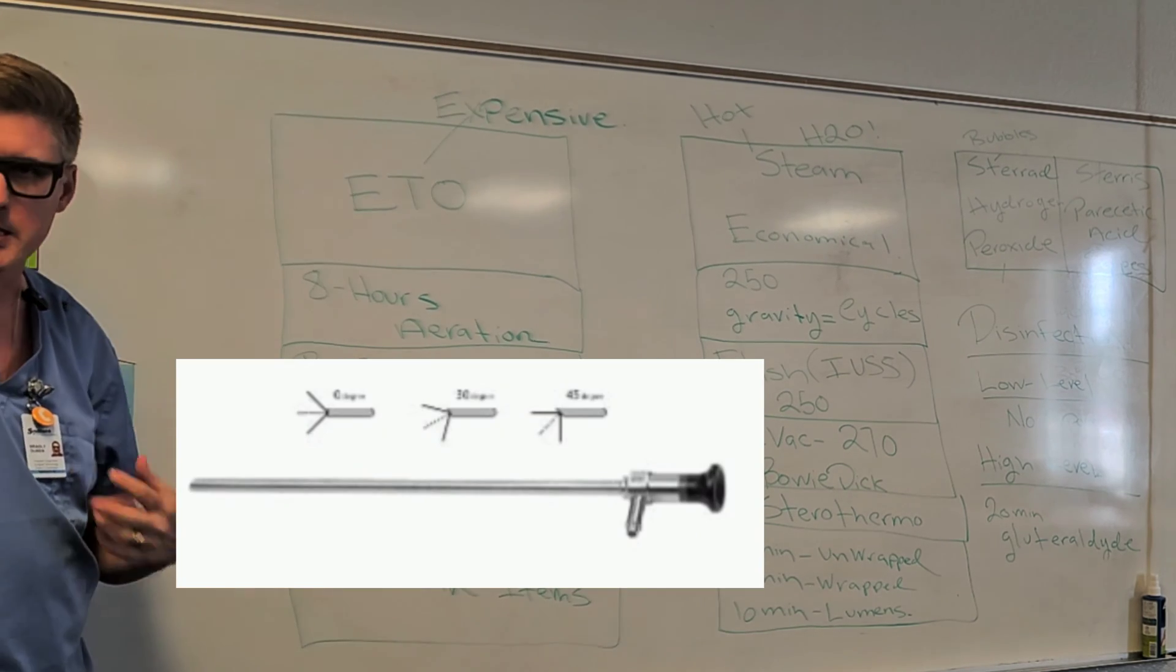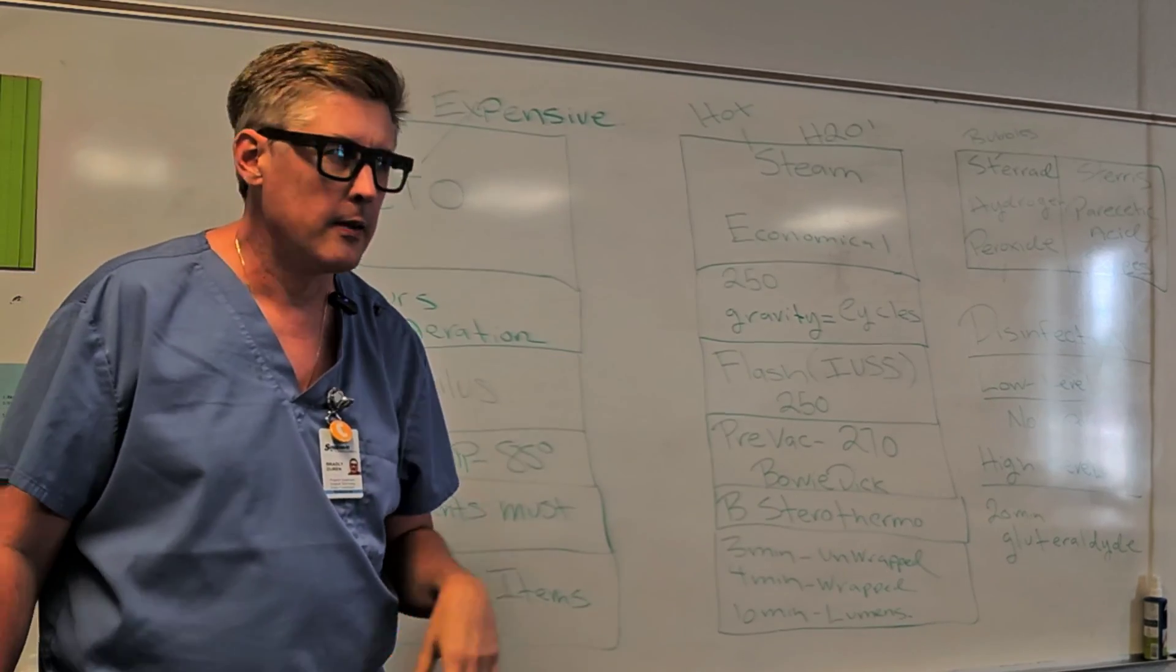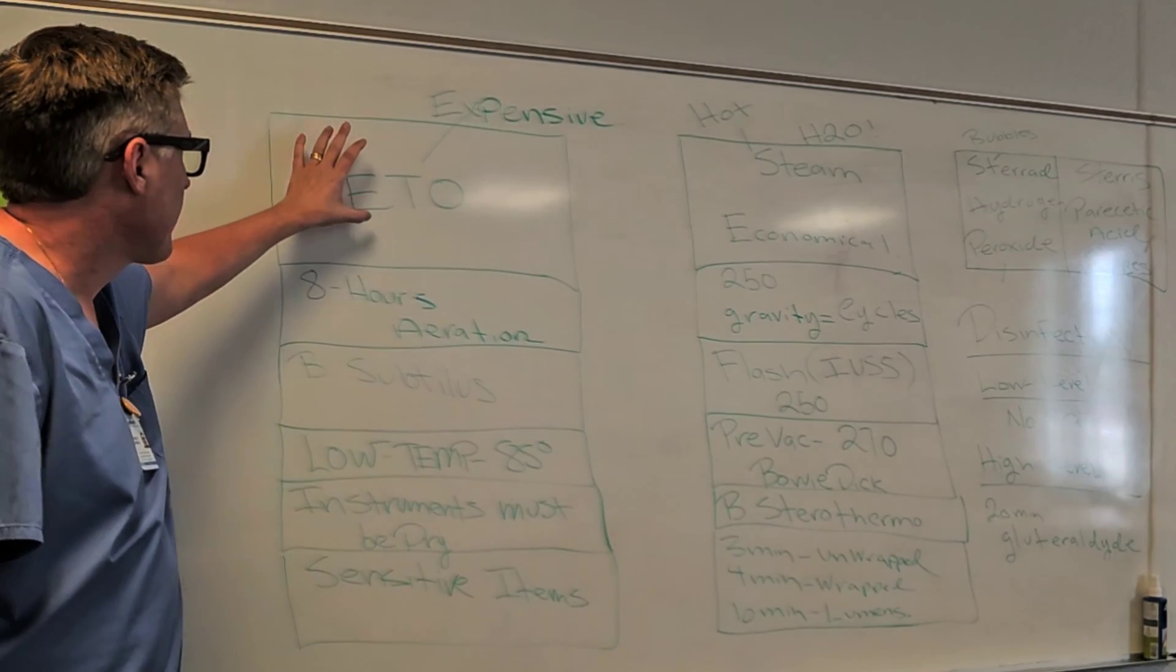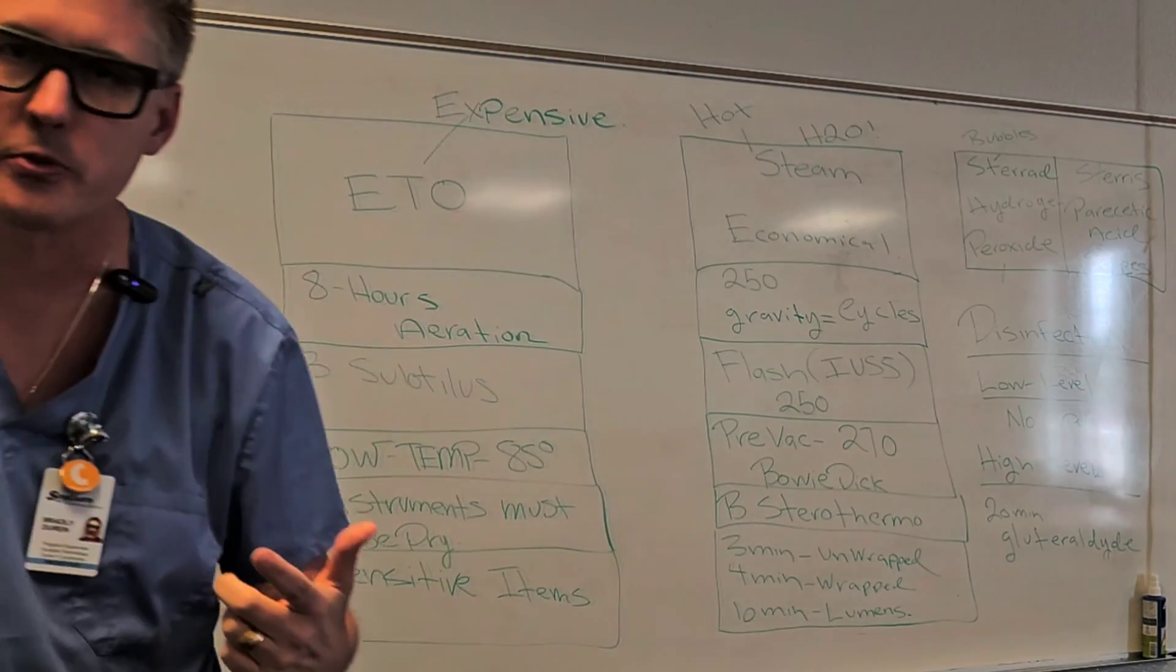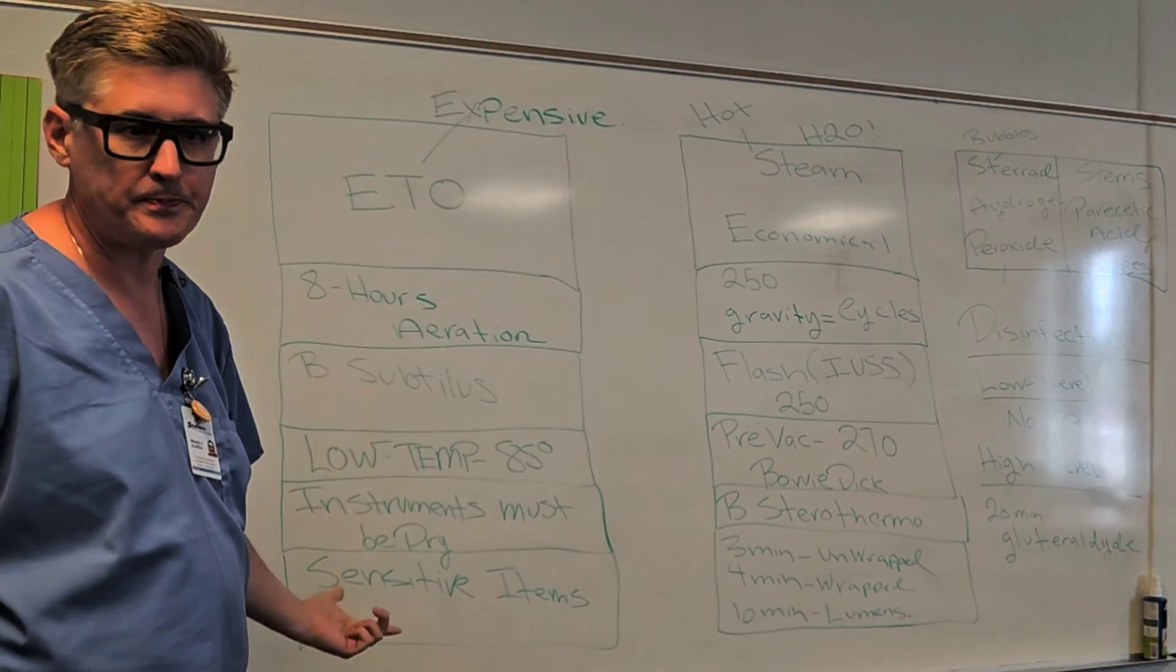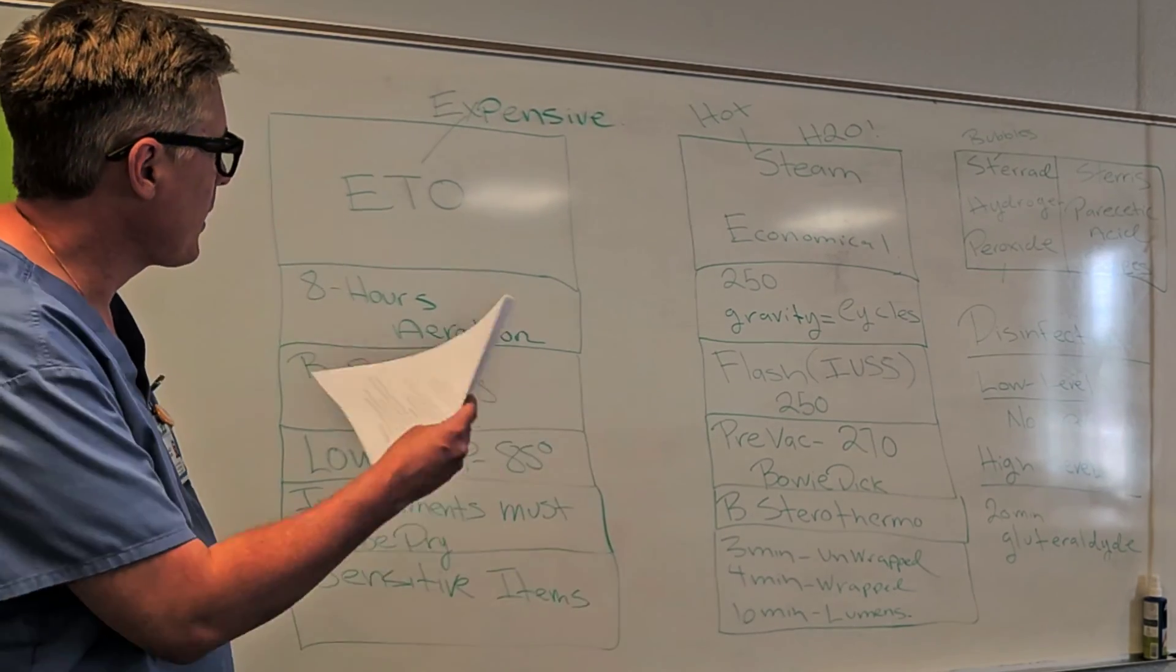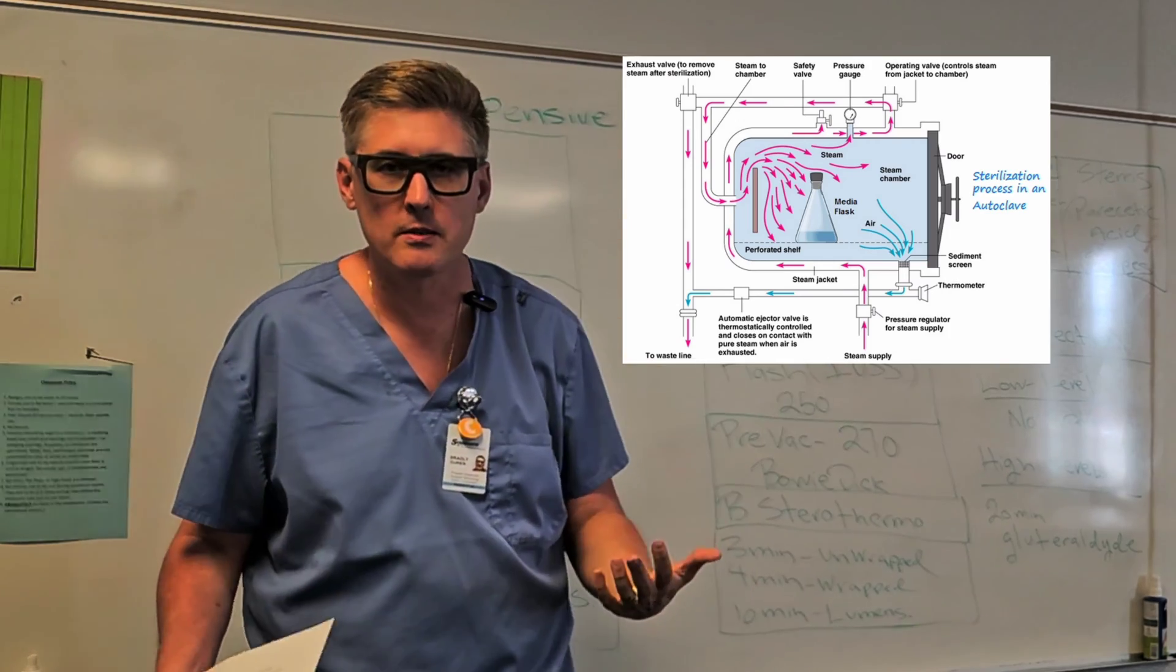It's used for sensitive items, right? Scopes, lenses, things that can't go in steam. And there's other processes for those also. But for right now, ethylene oxide was used for more sensitive items like scopes. So there's an expensive version of sterilization. And I probably have tons of questions on that, but we're going to jump right over to steam, the steam process of sterilization.